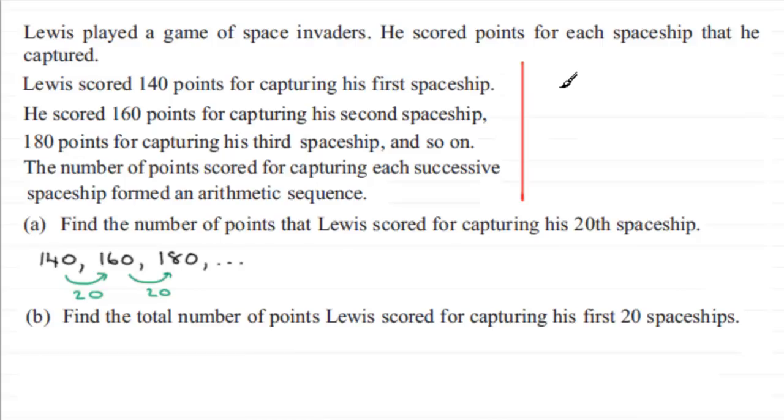Just as a quick recap, the nth term of an arithmetic sequence is given by this formula: a, the first term, plus n minus one times d, the common difference.